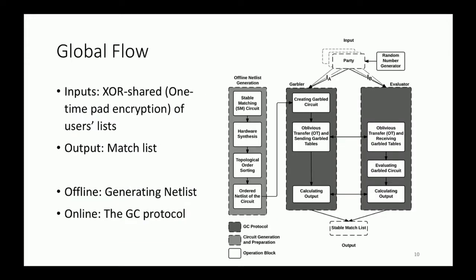This is the global flow of our end-to-end system. It starts with describing the functionality as a boolean circuit. So we have written the stable matching algorithm in Verilog hardware description language, then we have fed that into a hardware synthesis tool to get the netlist. Then we topologically sort the netlist to avoid any deadlocks, and at the end we have a sorted netlist of the function.